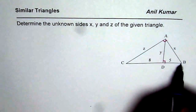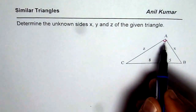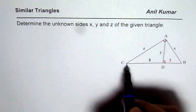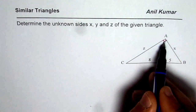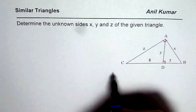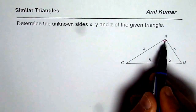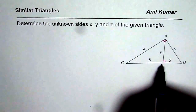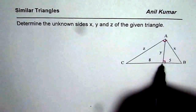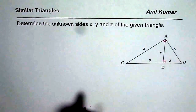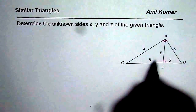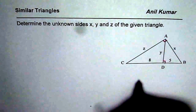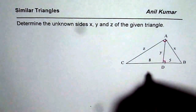We have two — rather three — right triangles here. Triangle ABC is a right triangle with 90 degrees at A, and then we have two small right triangles ACD and ABD. As you know, in this particular case all these three triangles are similar. Let us see how.